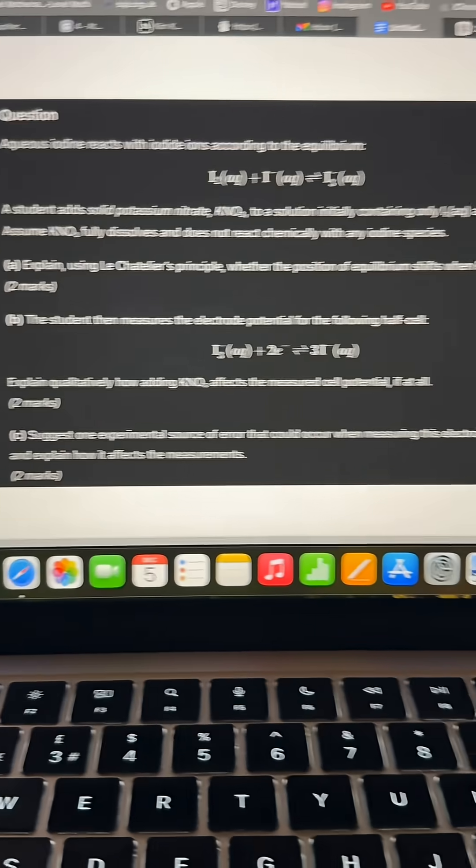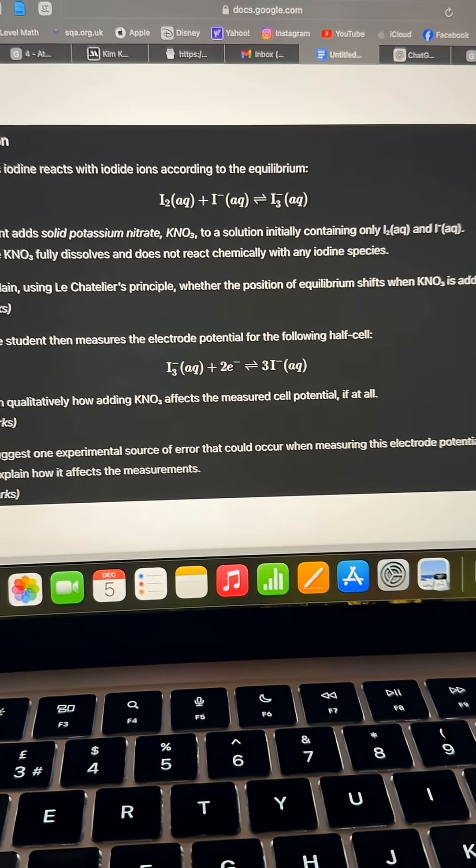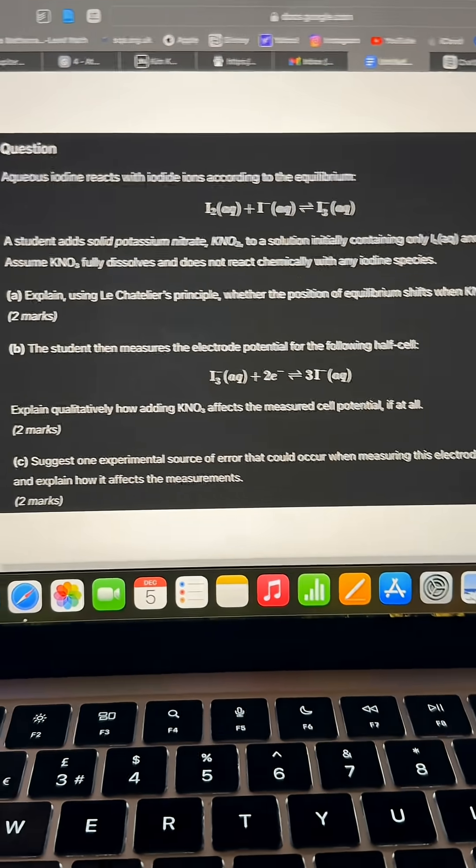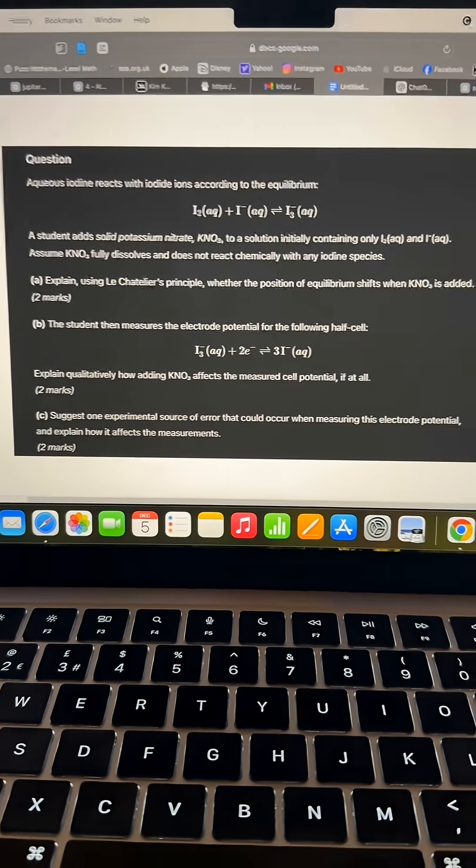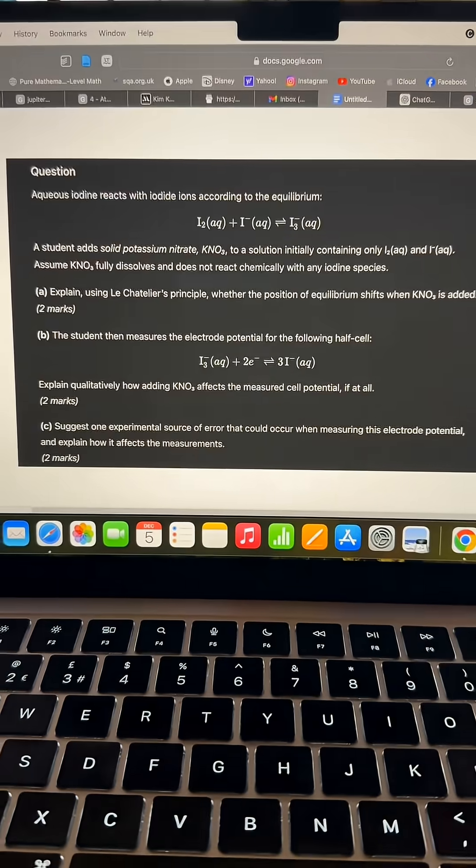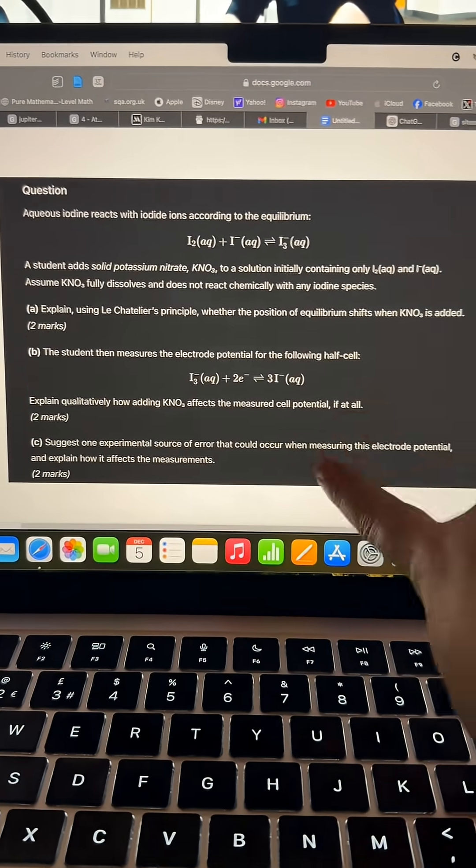When you're doing AO3 or application questions, look for the clues inside the question itself. Let's say you get a question like this and it's an application question using Le Chatelier's principle as well as electrode potential. First thing you want to do is literally just point out what each of the topics are for each of the questions.